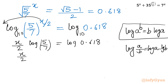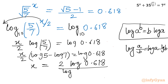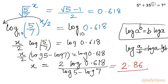So: (x/2)·(log 5 − log 7) = log(0.618). Therefore x = 2 × log(0.618) / (log 5 − log 7). After putting in the values of log 0.618, log 5, and log 7, I get the solution: x ≈ 2.86. This is a positive, accepted solution.